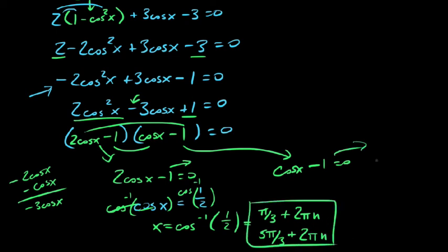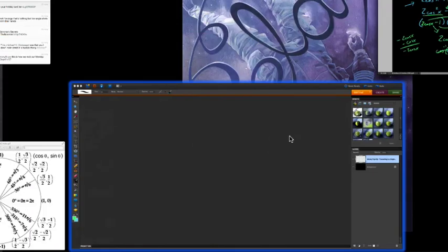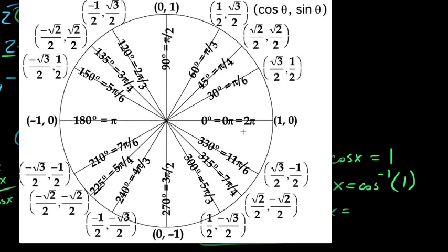Now solving this equation right here, we say if we add 1 to both sides, we get cosx = 1. This would imply that the angle here is x = cos⁻¹(1). Where do I get a cosine of 1? It only occurs at one angle, and that's our 0 radian, our 2π radian angle, where cosine is 1.